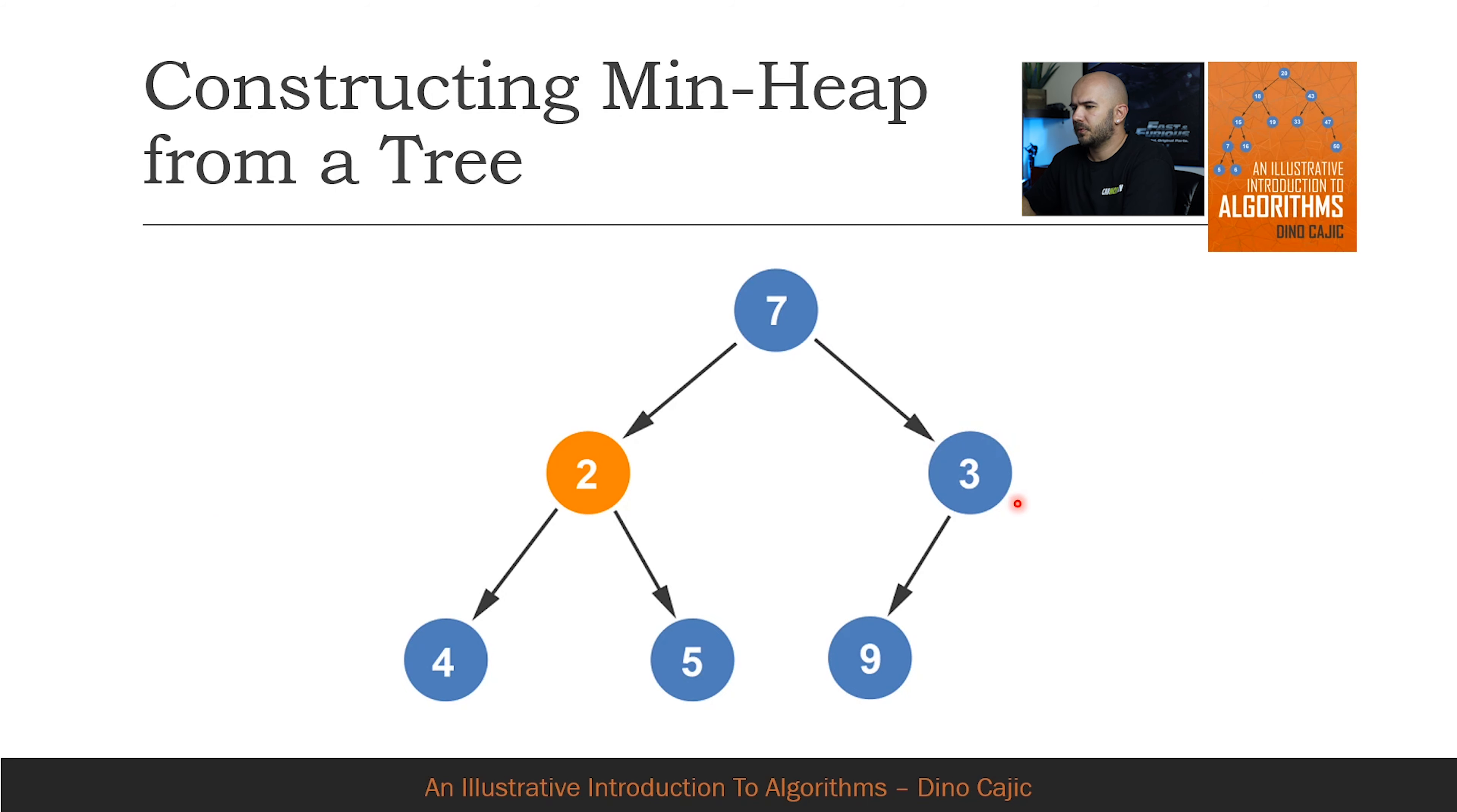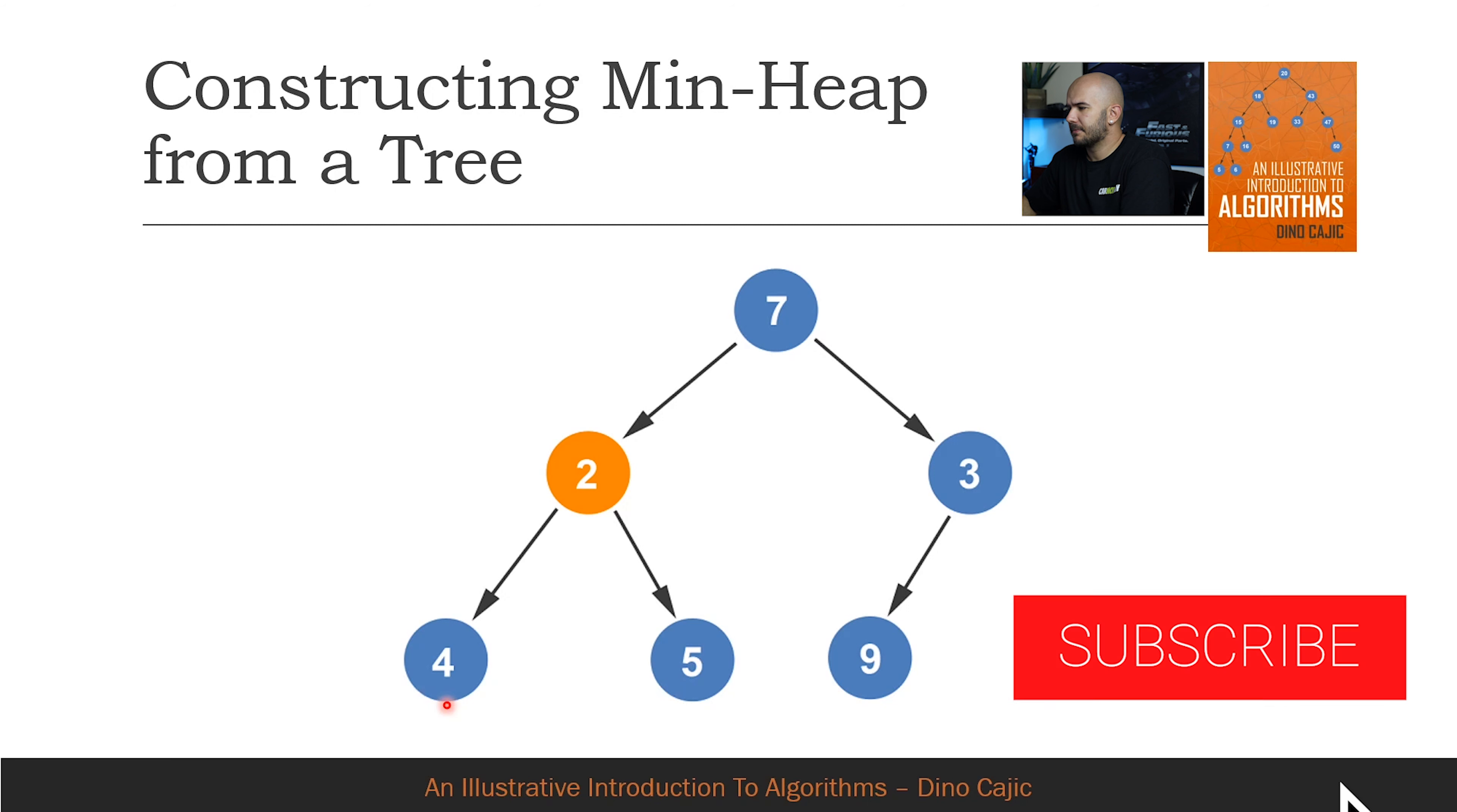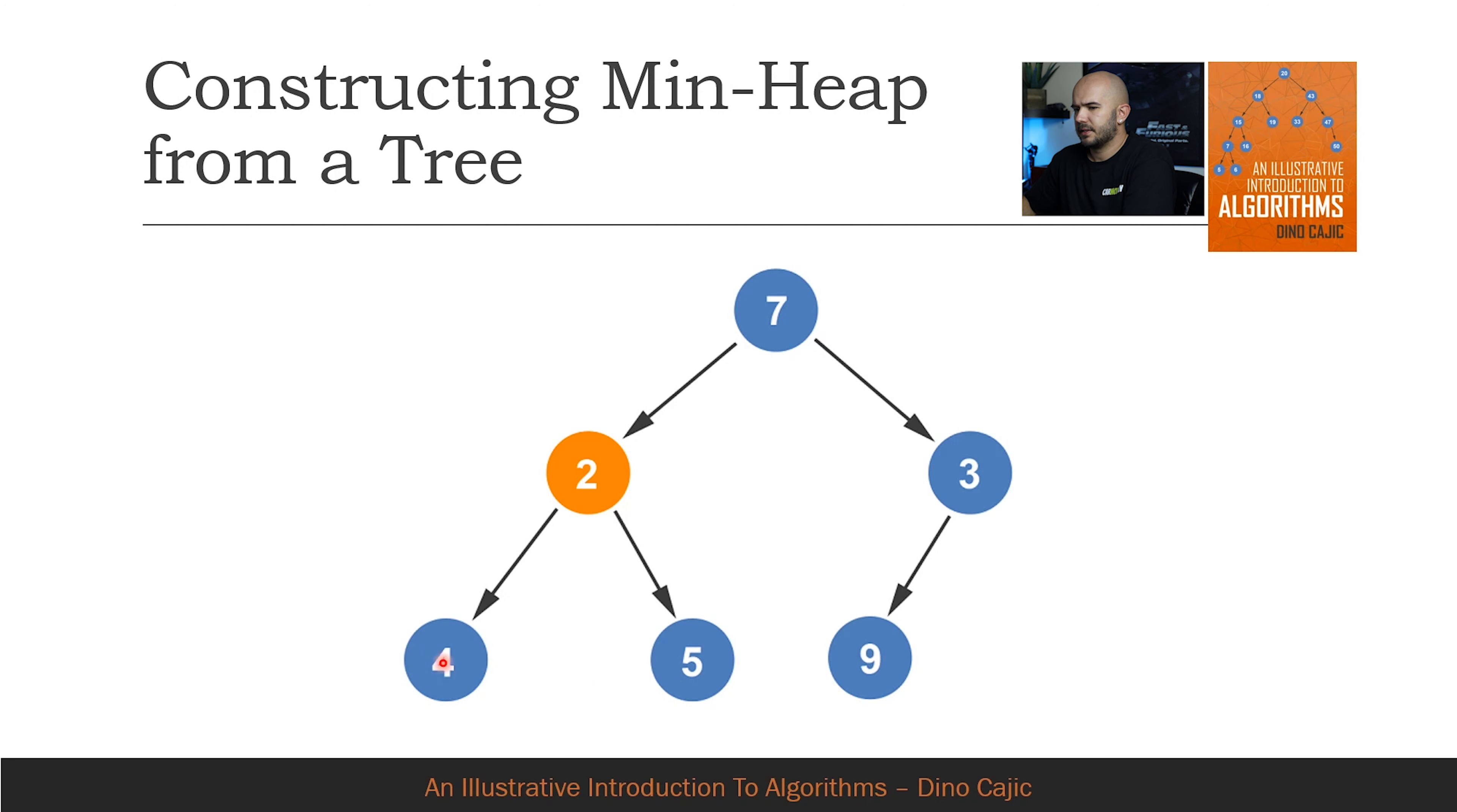We're done with the third node and we move to the node before, which is node 2. At node 2, there are two children. A comparison is made between the two children and the smallest node is selected, in this case the node with the value of 2.